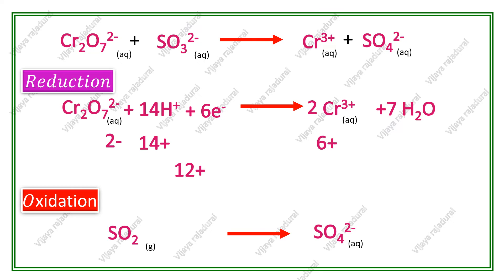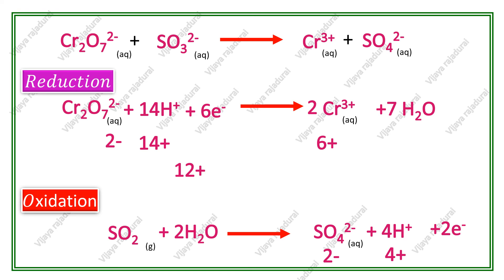Next is balancing the oxidation reaction. On the product side, 4 oxygen atoms are present, but on the reactant side only 2 oxygen atoms are present. So we add 2 water molecules on the reactant side. To balance the resulting hydrogen atoms, we add 4 H⁺ on the product side. On the reactant side, both molecules are neutral so the charge is 0. On the product side, sulfate ion gives 2 negative charges and 4 H⁺ gives 4 positive charges, giving a net charge of 2 plus. So we add 2 electrons on the product side.